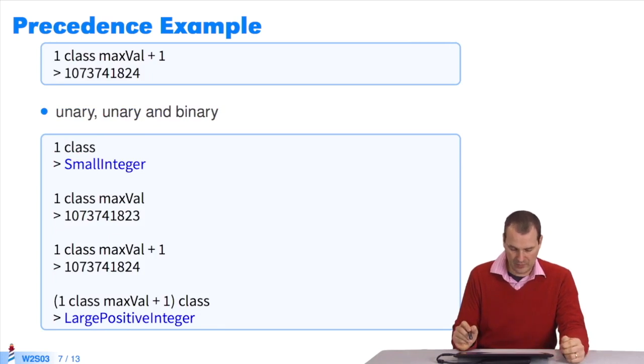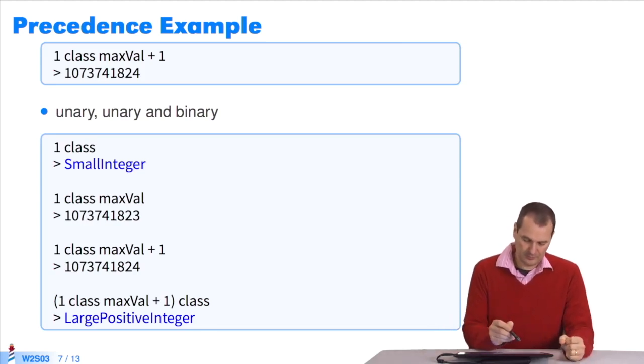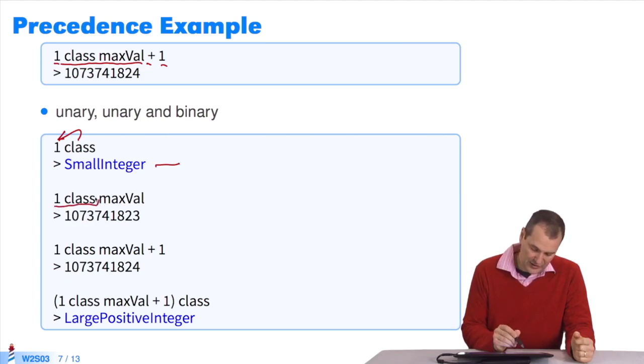This is an example to show you. You can also do automatic conversion with Pharo. I have the expression one class maxval plus one. I have two unary messages, class and maxval, and one binary message. How is this expression executed? I send the message class to the small integer one. It returns small integer, since one is an integer. Since it's the result of one class, I send it the message maxval.